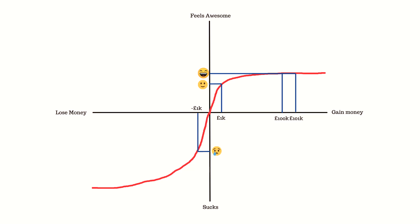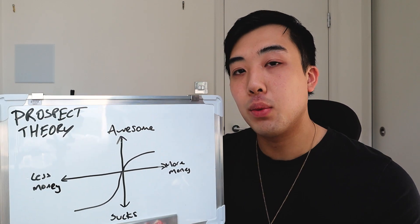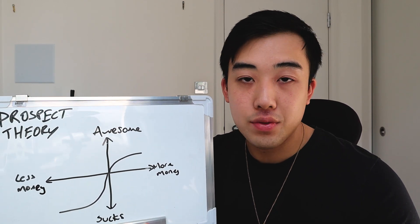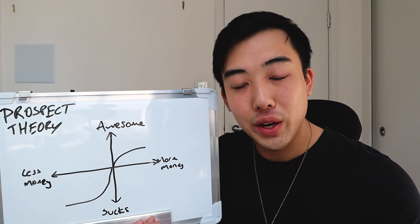Now let's look at losses. Imagine you were to lose a thousand pounds — you'd feel pretty bad. But what if you lost a hundred thousand pounds? You'd feel terrible. But what if you lost a hundred and one thousand pounds? You probably wouldn't feel much worse than losing a hundred thousand. Again, this is what Prospect Theory shows us: as the amount of money we lose gets larger, we become less sensitive to how much we're losing, and we reach a point where losing more simply can't feel worse than it already does.